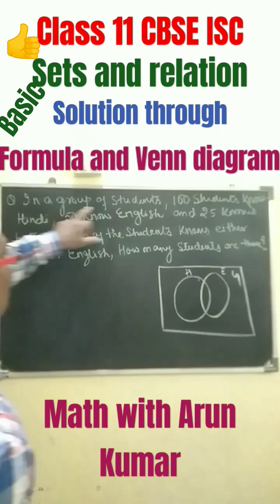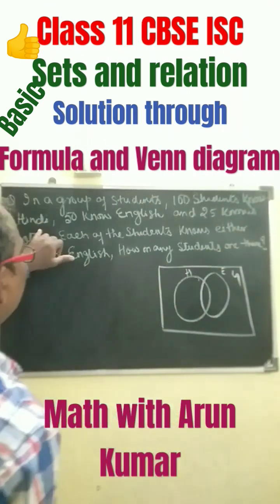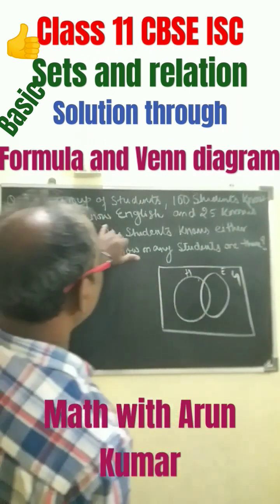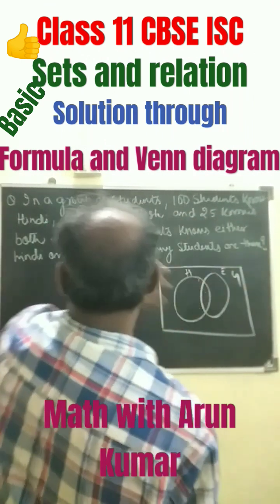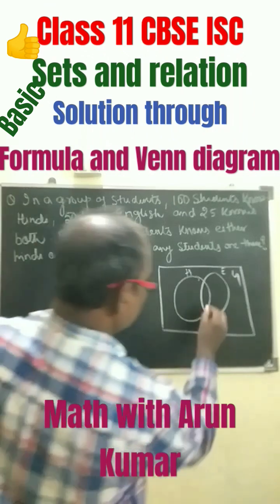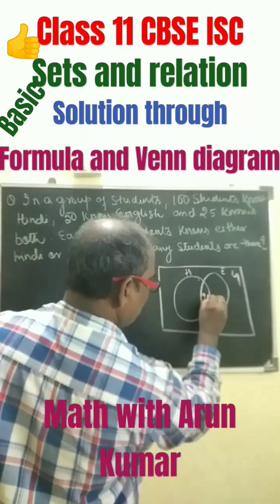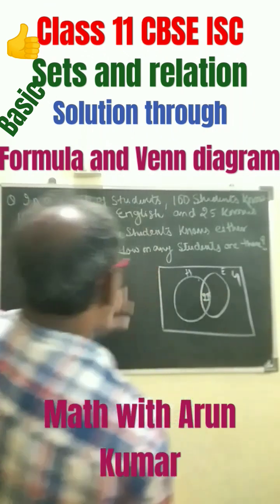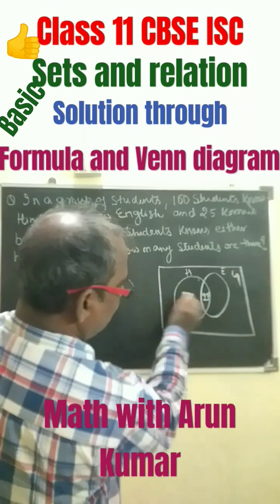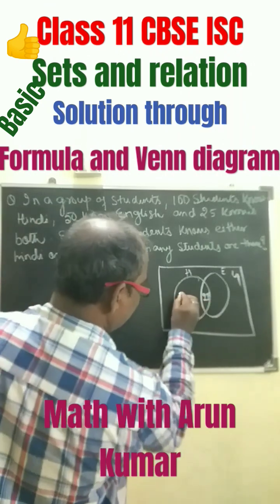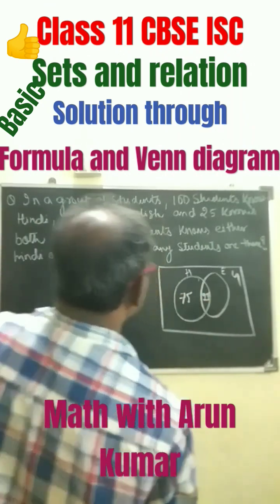100 students know Hindi, 50 know English, and 25 know both. 25 knows both means right here, 25. How many students know Hindi? 100. So 100 minus 25 is 75 — we place 75 here.